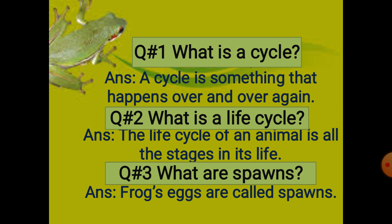Next, in the life cycle of a frog, you learned about spawns. Frogs' eggs are called spawns. What are spawns? Frogs' eggs are called spawns. That was all about the cycle, the life cycle, and spawns.